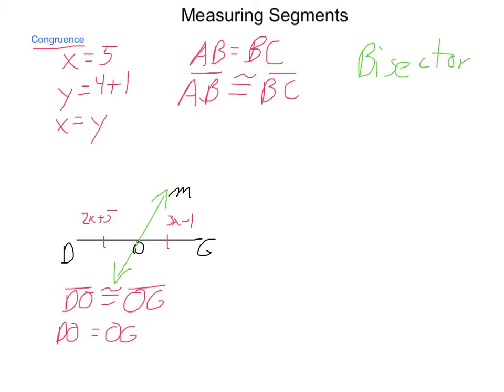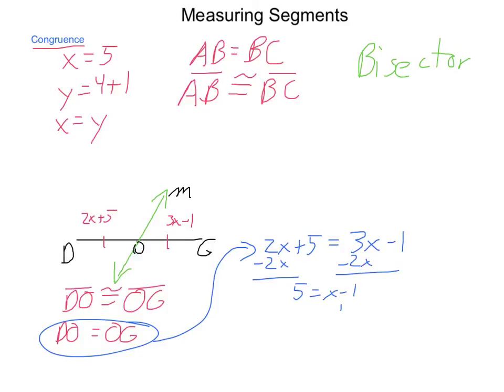Taking that idea and using it with the expressions that are given, we have 2x plus 5 is equal to 3x minus 1. Solving this equation, I'm going to begin by subtracting 2x from each side. So, 5 is equal to x minus 1, add 1, 6 is equal to x.